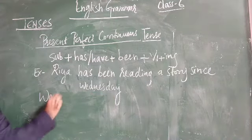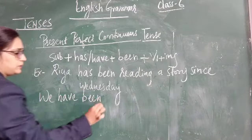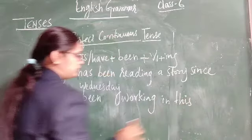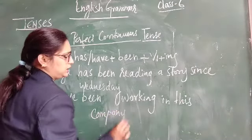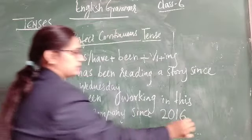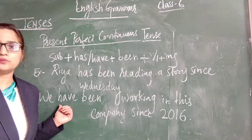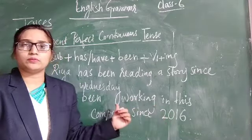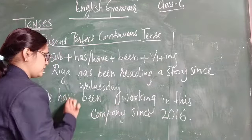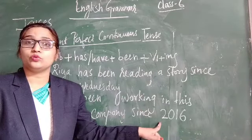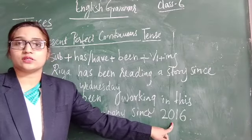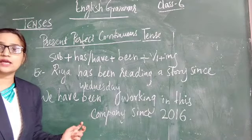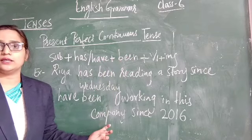Another example: We have been working in this company since 2016. 'We' is the subject, so we use 'have been', and 'work' becomes 'working'. This means since 2016 we started working in that company and we are still working. This is also an example of present perfect continuous tense.